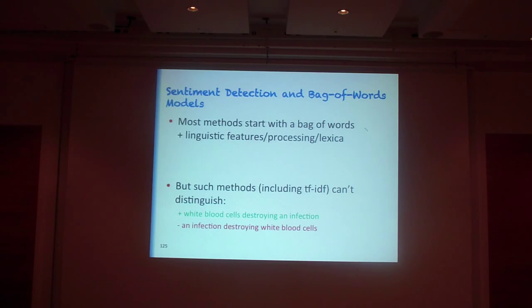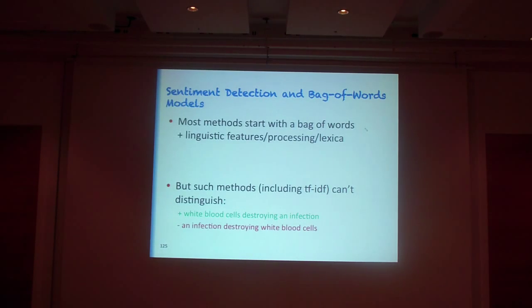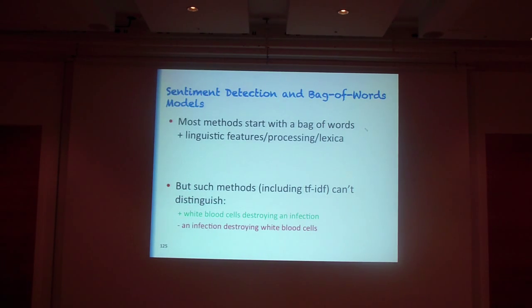Most methods for sentiment analysis start with a bag-of-words representation, then add linguistic features, processing, and lexica. Lexica are a little tricky for sentiment — for instance, 'surprising' is a very positive word for movie and book reviews, but on car reviews about steering and braking, surprising isn't positive anymore. TF-IDF vector representations have cases you'll never be able to tell apart — for instance, 'white blood cells destroying an infection' and 'an infection destroying white blood cells' use the exact same words and the same TF-IDF representation, but in one you live and in the other you might die.